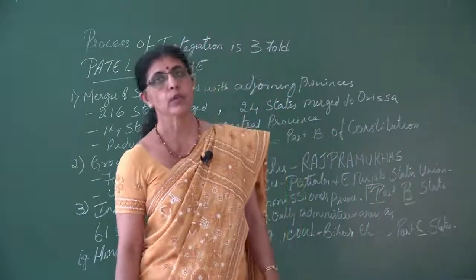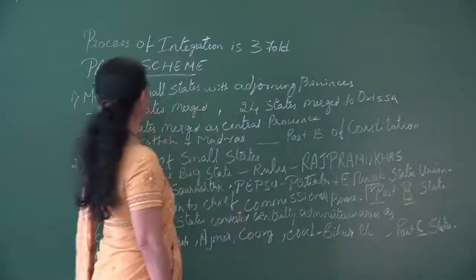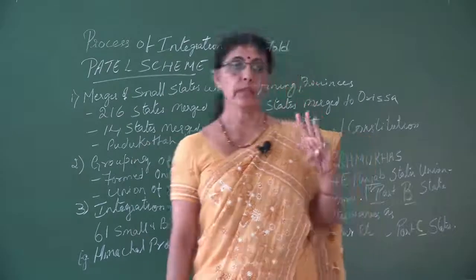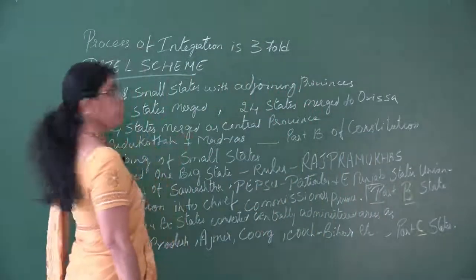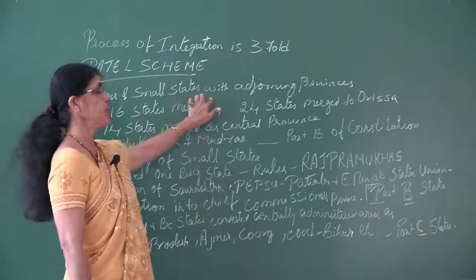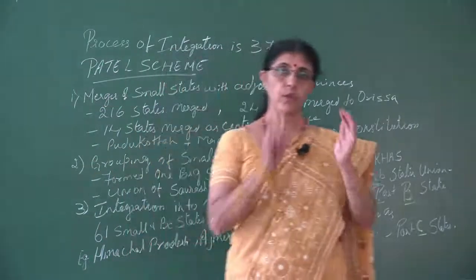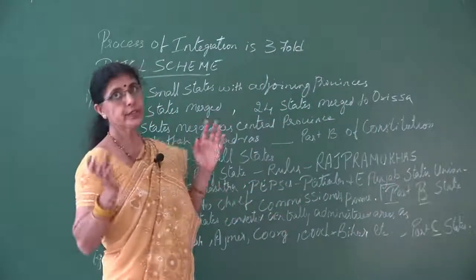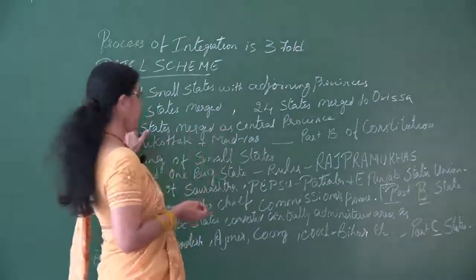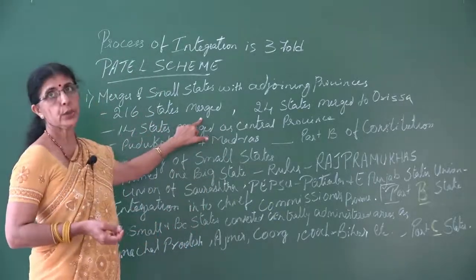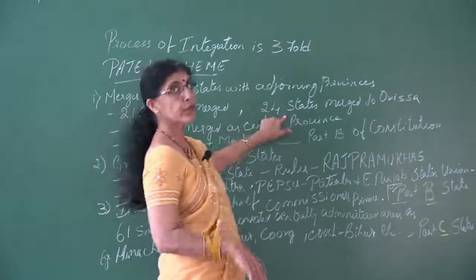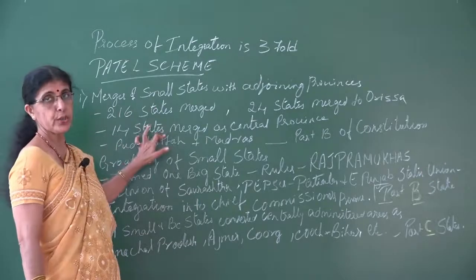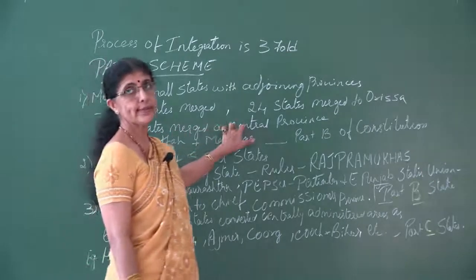The integration process suggested by Sardar Patel was a threefold process called the Patel Scheme. The first method was the merger of small states with adjoining provinces, forming larger states. For example, 216 states merged together to form a state, 24 states merged with Orissa, and 14 states merged together to form what was called the Central Province.